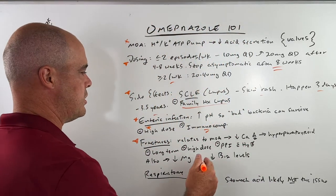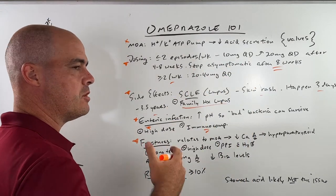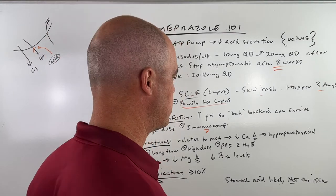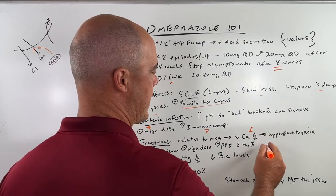But one of the things we see, again, coming back to how it acts in your body, that decrease, the more basic stomach acid, the less acidic stomach acid, you can get a decrease in calcium absorption. When that happens, you can get what's called hyperparathyroidism.